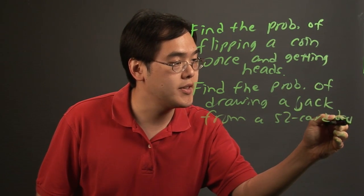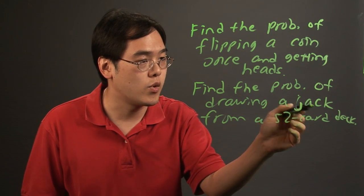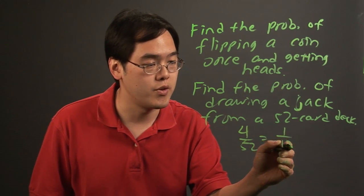Again, somewhat lengthy to write, but at least the reader knows exactly what it is that you're looking for, and then they'll know that since there's four jacks in a 52 card deck, they'll say 4 over 52 and reduce that to 1/13.